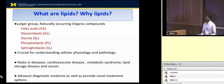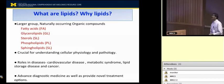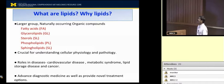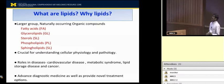What are lipids? Lipids are a large group of naturally occurring organic compounds which include fatty acids like palmitic acid, myristic acid, oleic acid, arachidic acid, etc. Glycerolipids like monoglyceride, diglyceride, and triglycerides. Sterol lipids like cholesterol and cholesterol esters. Phospholipids are glycerolipids.